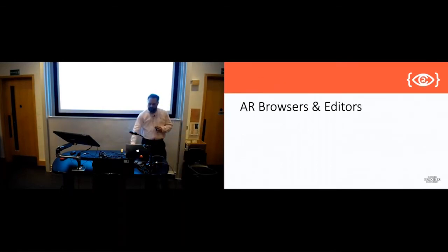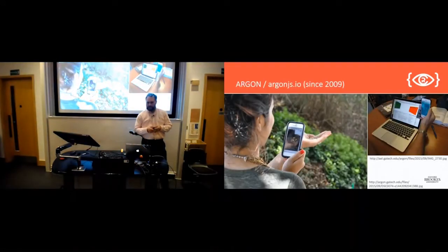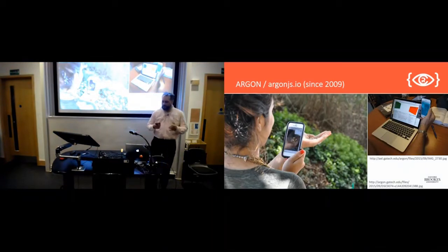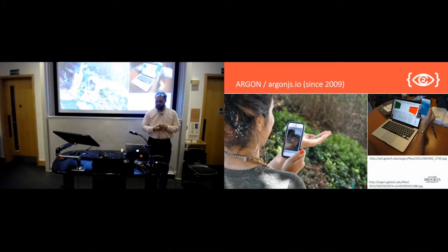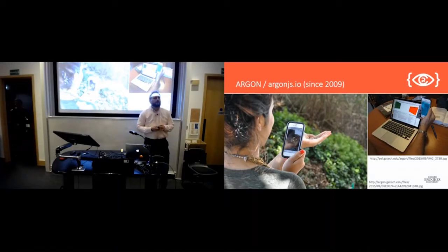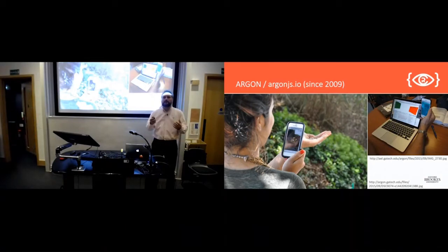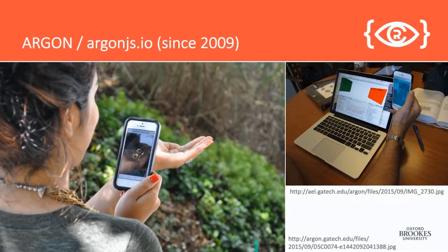Let's start with AR browsers and reality editors. One of the first AR browsers around is Argon, which is also an SDK. Argon is an augmented reality browser that tries to use open technologies, in particular web technologies, allowing users to point their browser at a web URL which contains all the data in HTML and associated JavaScript required to render an augmented reality application — making things appear, or working with surfaces, objects, and markers.